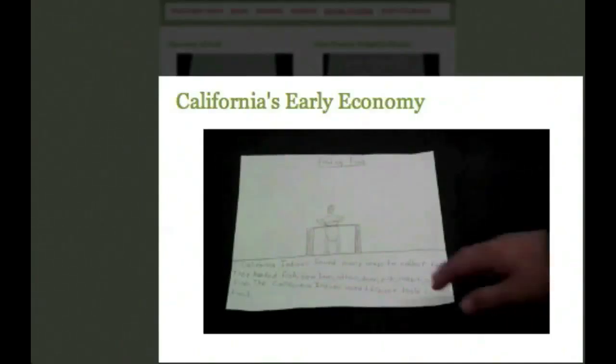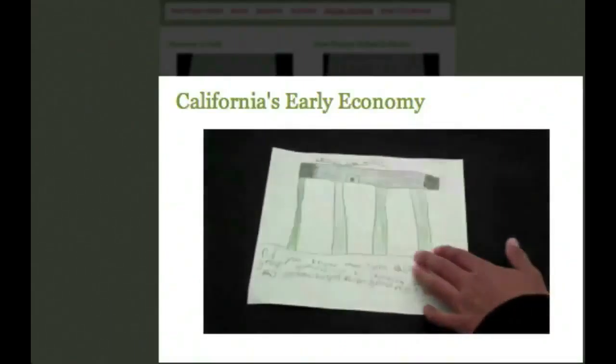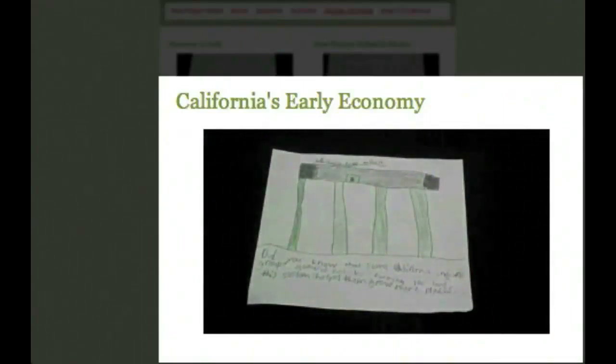The California Indians used to get food. Did you know that some California Indian groups gathered food by farming the land? This system helped them grow more places.